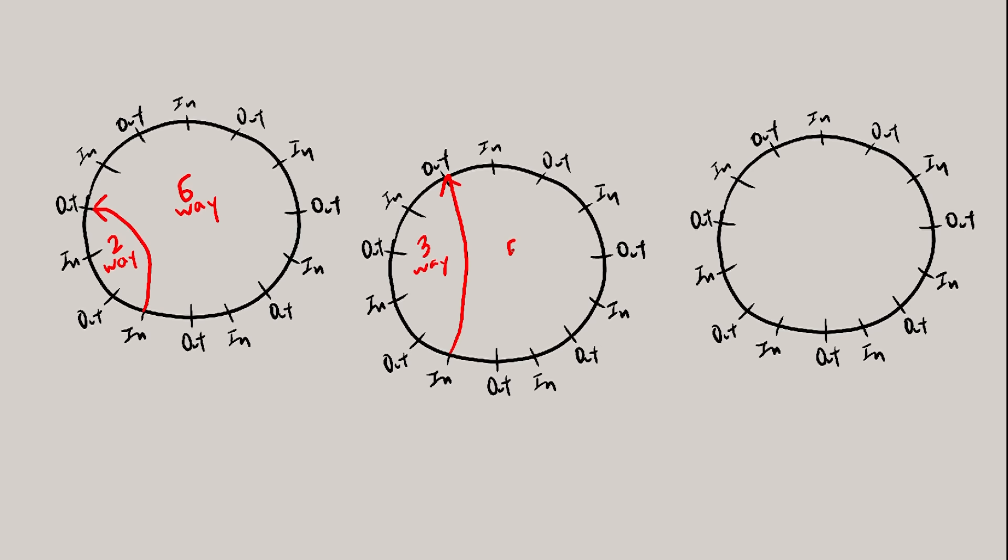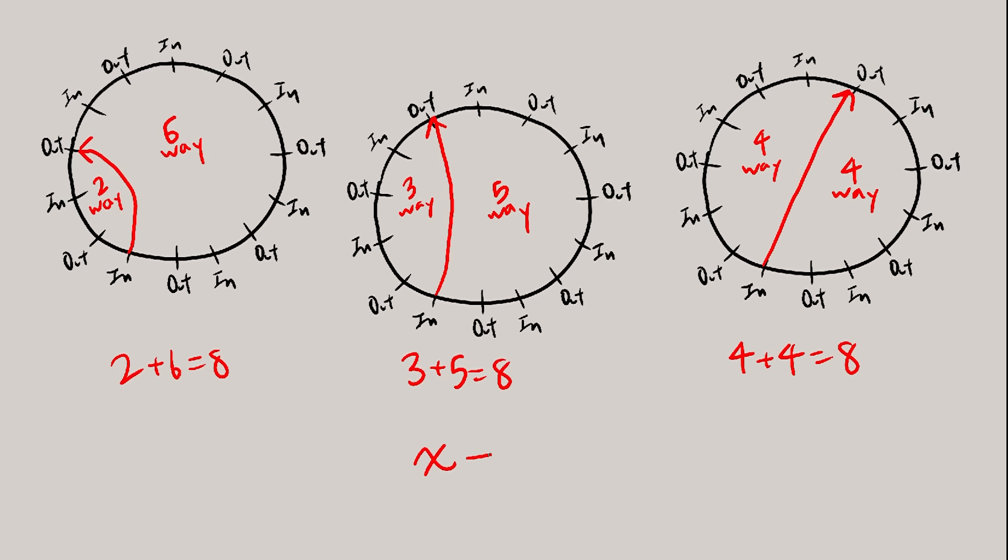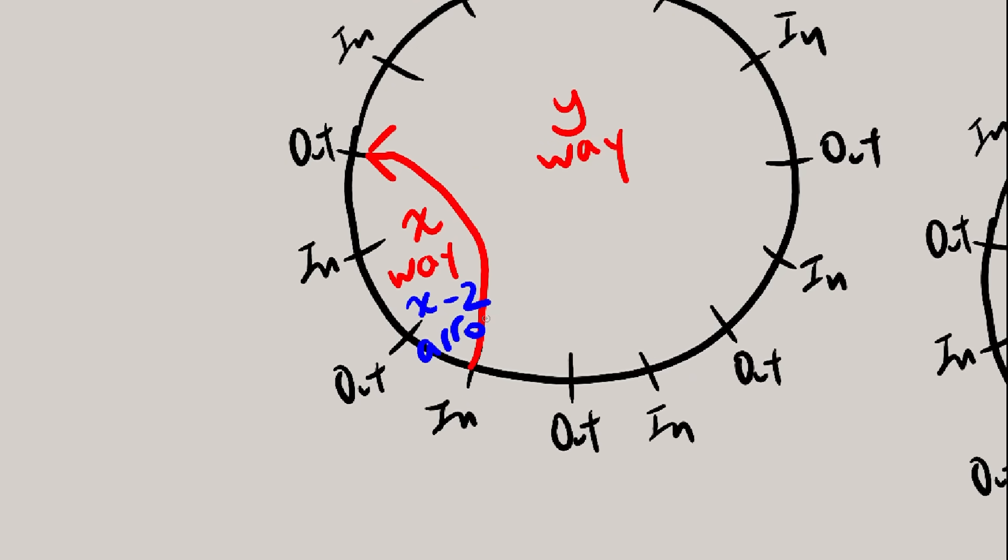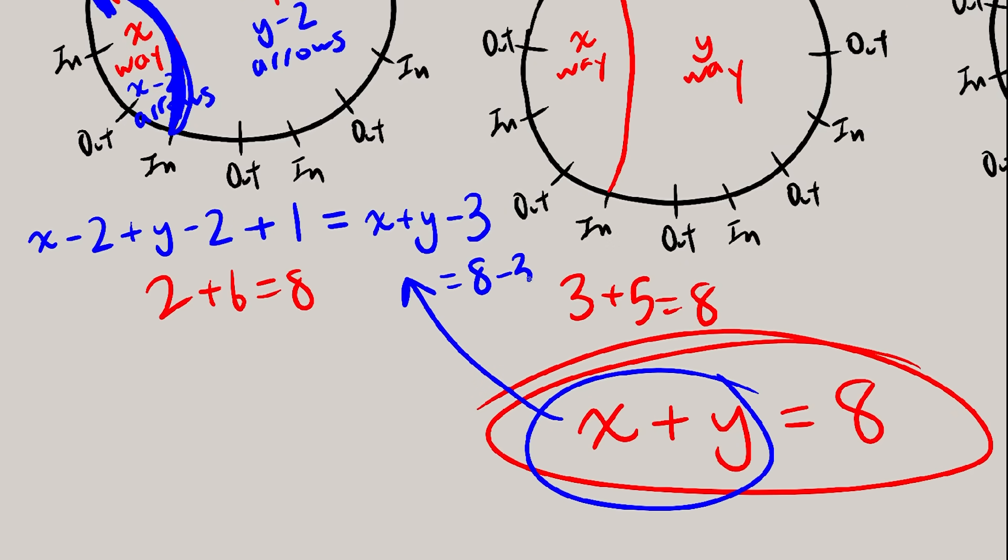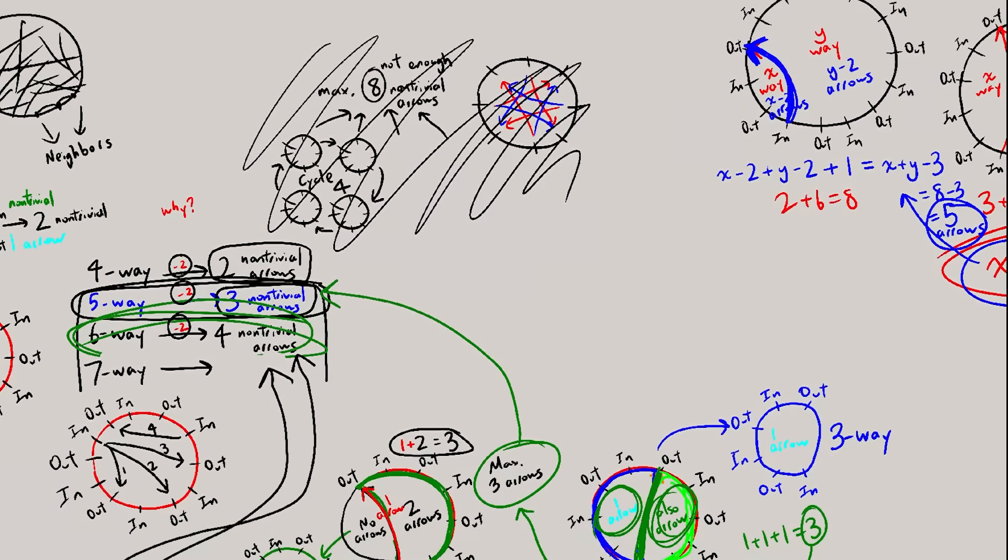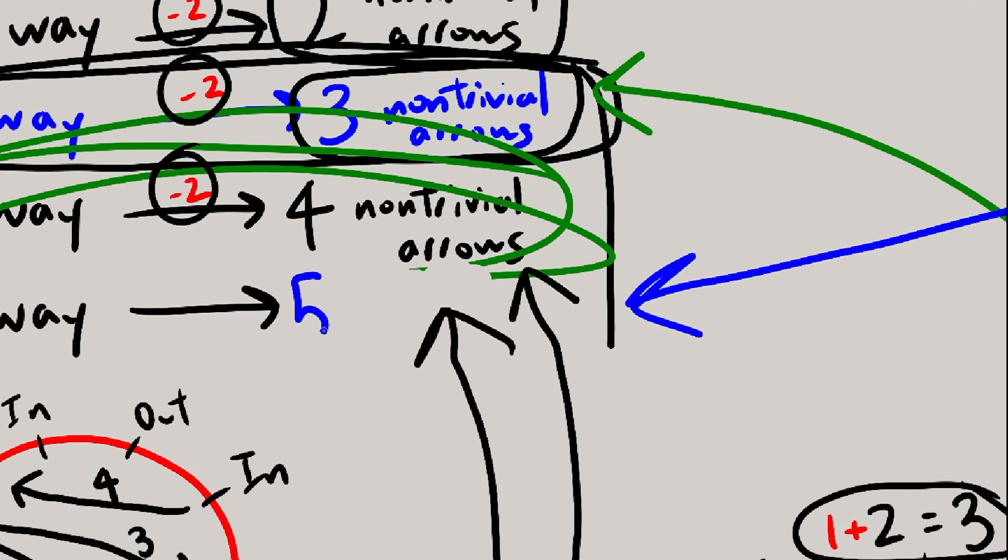7-way! We can split it into 2-way and 6-way, 3-way and 5-way, or 4-way and 4-way. Hmm, these all add up to 8, which is 1 more than 7. Let's just write x-way and y-way, where x plus y equals 8. We already know that x-way has maximum x minus 2 non-trivial arrows, and same thing goes for y-way, it has maximum y minus 2 non-trivial arrows. Adding these all up, we get x minus 2 plus y minus 2 plus the splitting arrow equals x plus y minus 3. We already know that x plus y is 8, so 8 minus 3 is 5 non-trivial arrows. Therefore, 7-way intersections have maximum 5 non-trivial arrows.